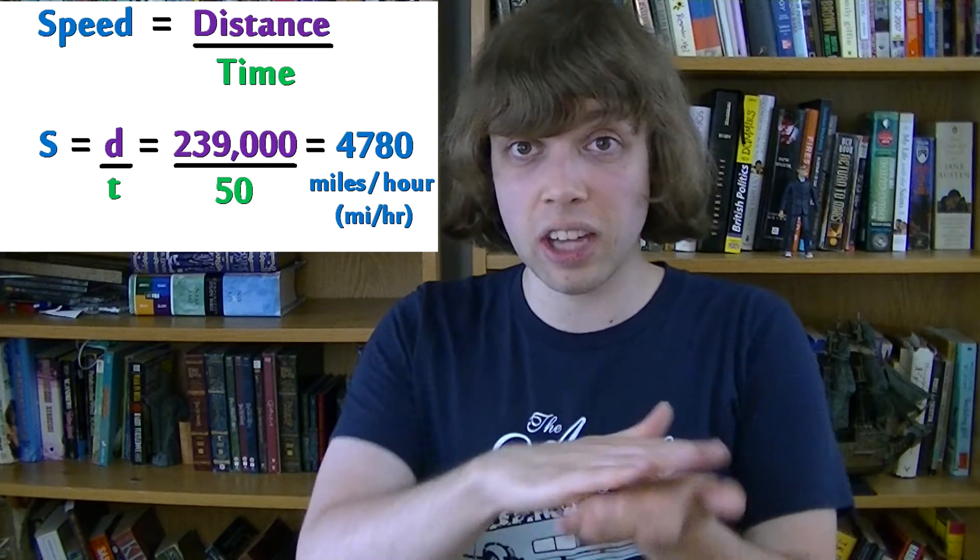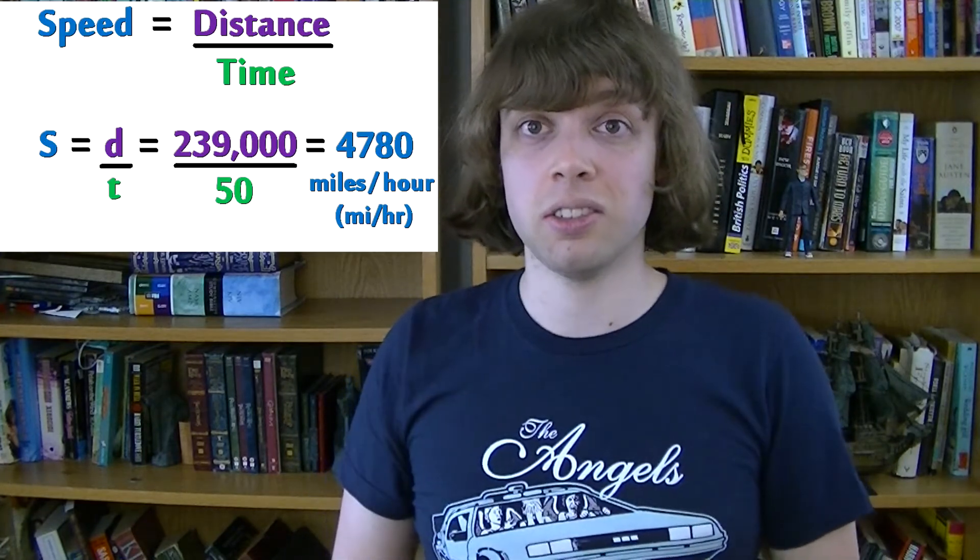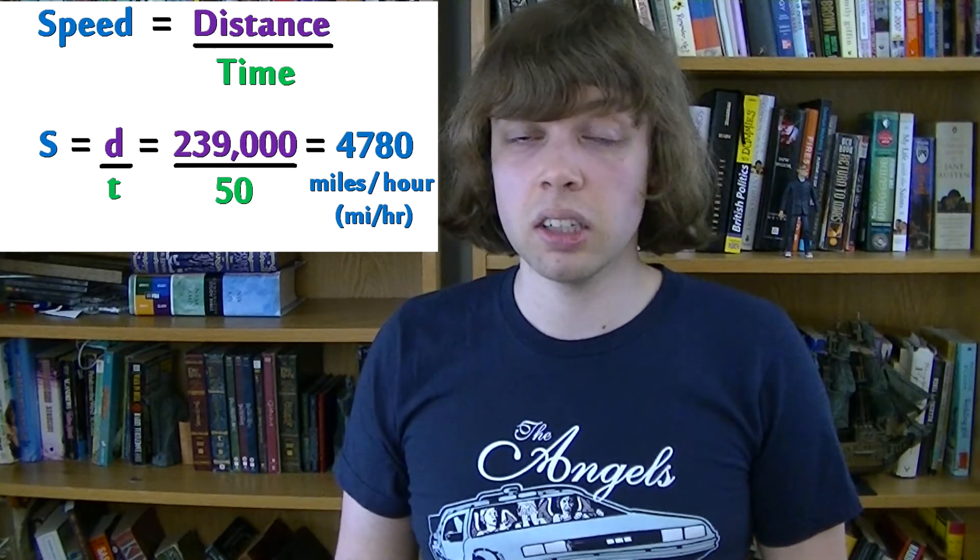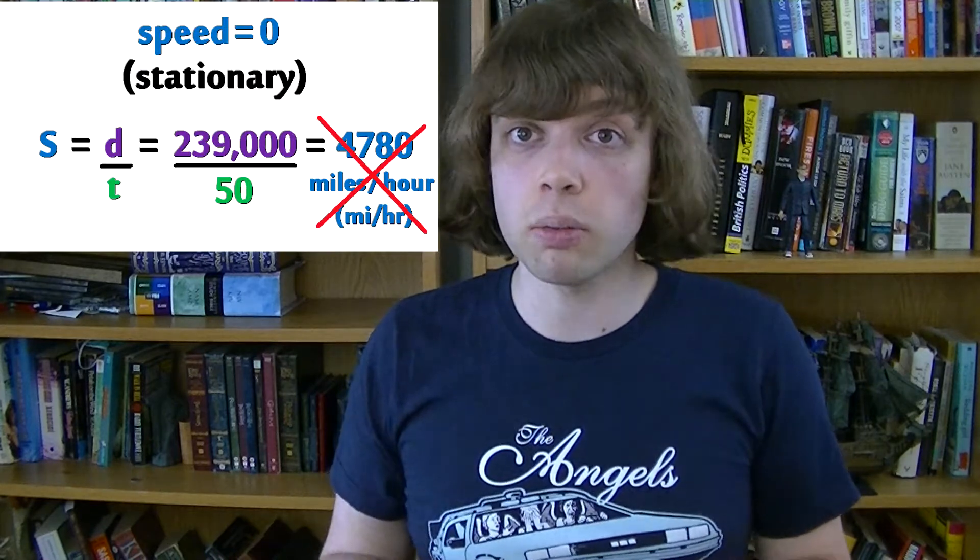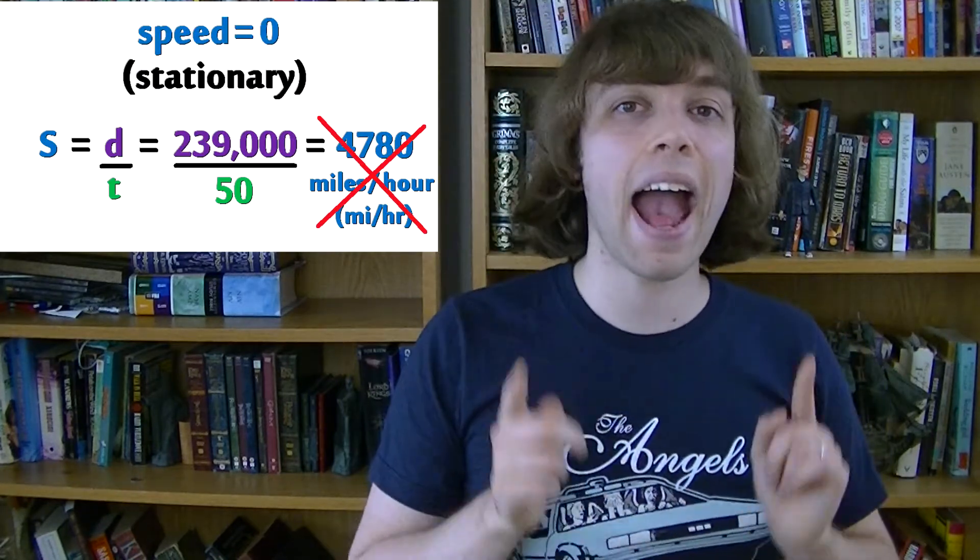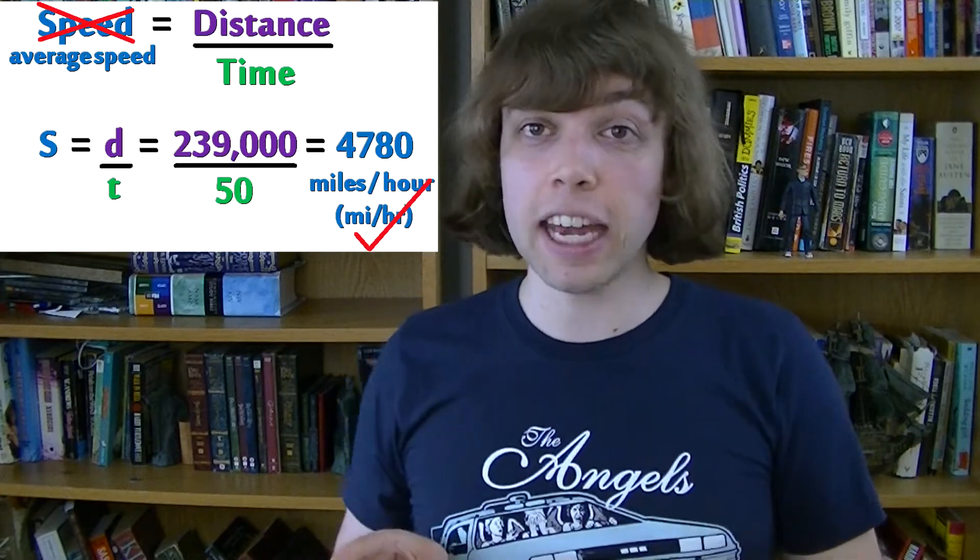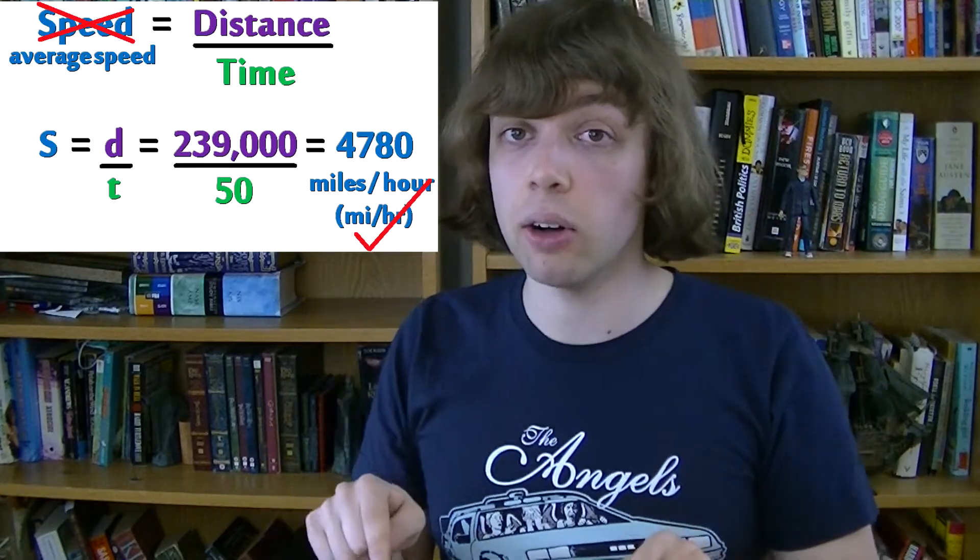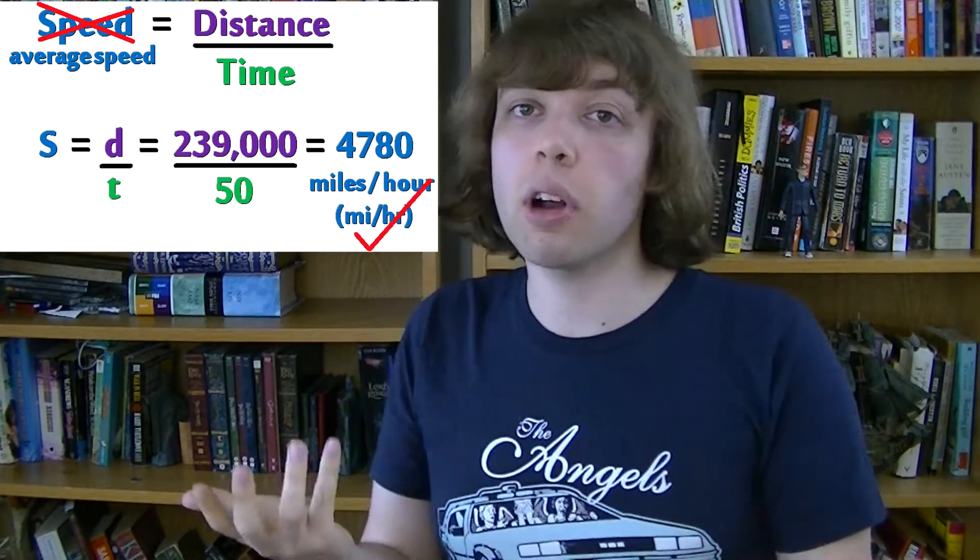Now that you've arrived on the moon, you're sat on the moon, you are stationary. Your speed is zero. What you calculated was your average speed during the journey. Your instantaneous speed, your speed right now, is zero. We can summarize like this.